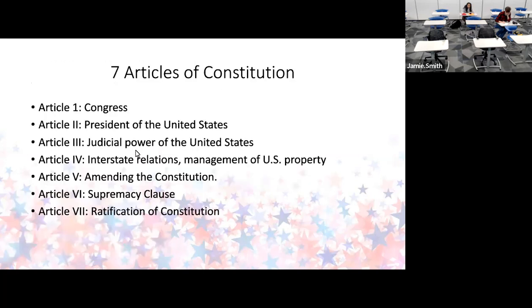This is like a table of contents. What are the articles? Believe it or not, there are only seven articles. You've heard of the three that structure our government: legislative, executive, and judicial. The legislative — Congress — is the longest article. Is that telling you something about where the founding fathers thought power should be? Not with the president, like many people think, and not with the judicial.